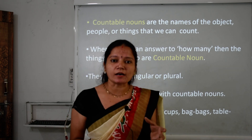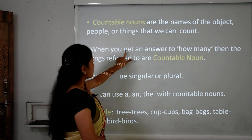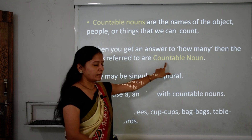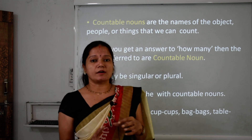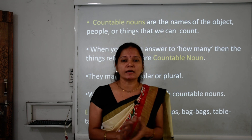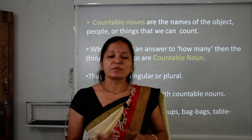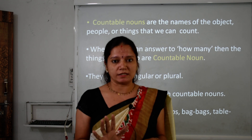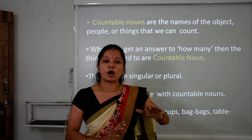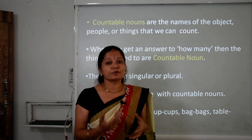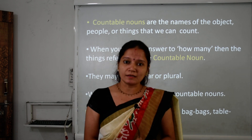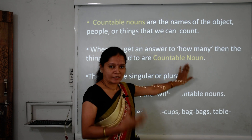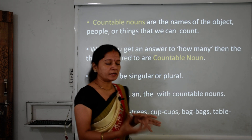How do we identify countable nouns? When you get an answer to 'how many,' then the things referred to are countable nouns. If I ask 'how many books were there,' you get the answer '5 books were there.' And if I ask 'how many balloons were there,' you get '3 balloons were there.' So when we get an answer to a 'how many' question, that is a countable noun.